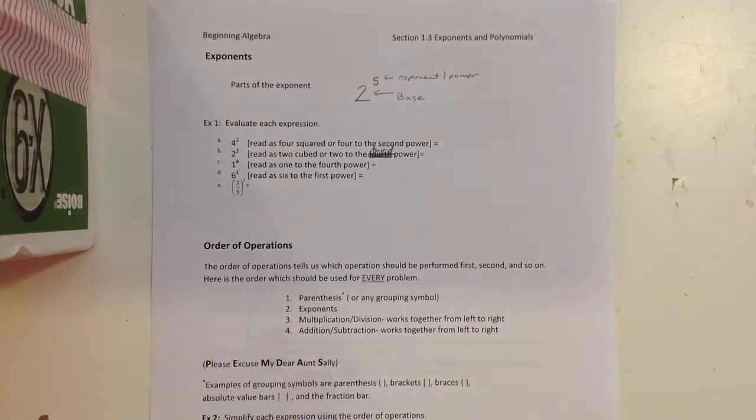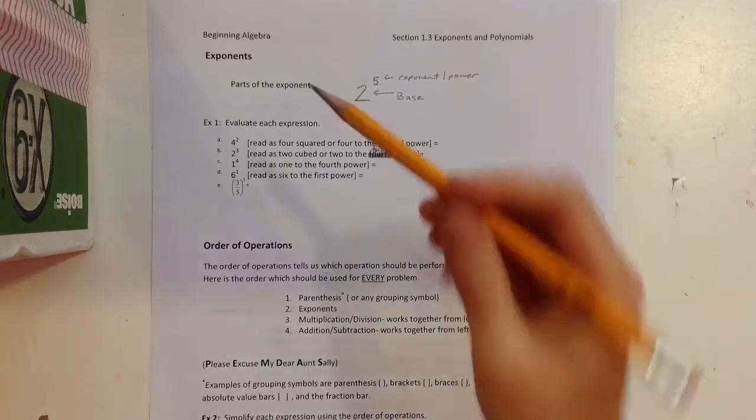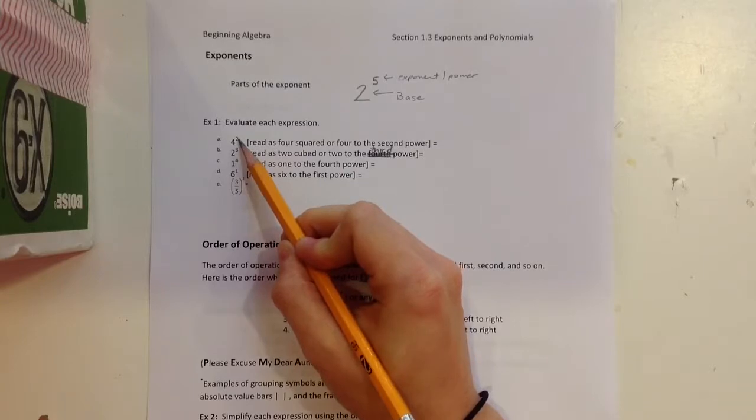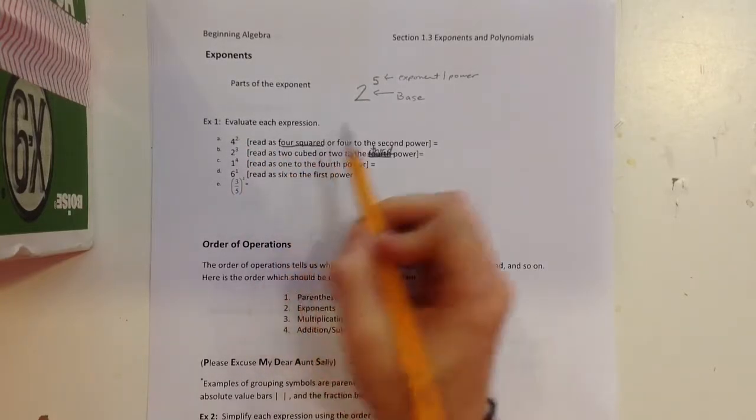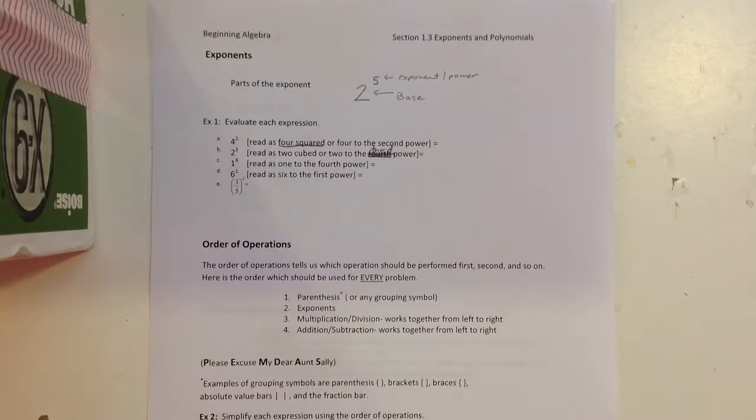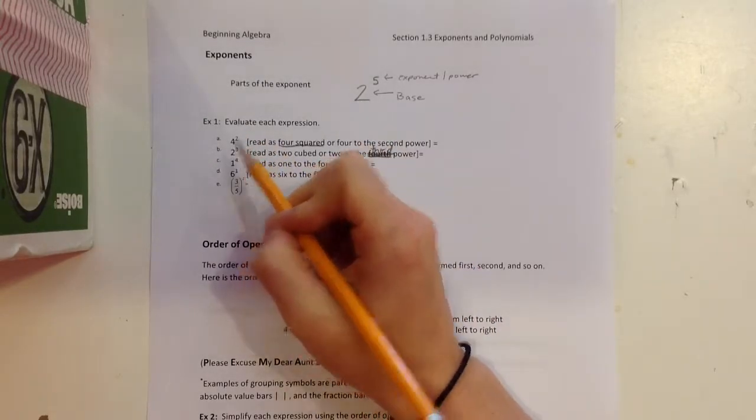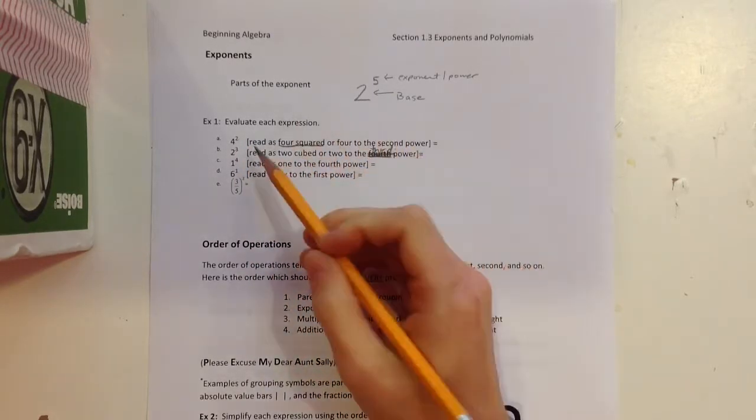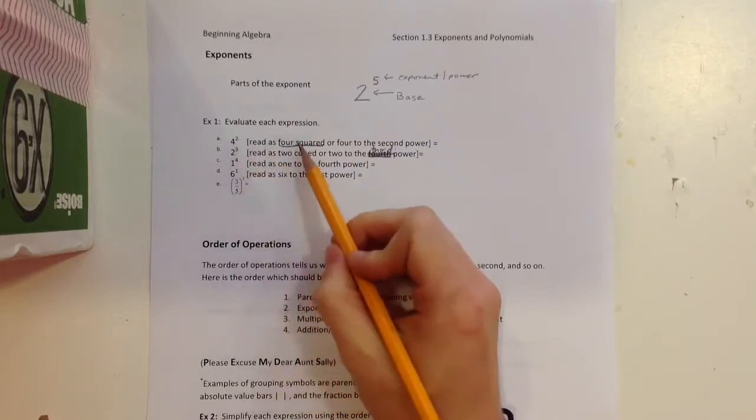I would actually read that as 2 to the 5th power. Below we have a couple of different evaluated expressions showing you the exponent and then in brackets how it's read. I have 4 with a little 2, so 4 to the 2nd power or 4 squared. There are two different exponents that have special names, the 2 and the 3. When you see to the 2nd power, you might see it written as to the 2nd power or squared.